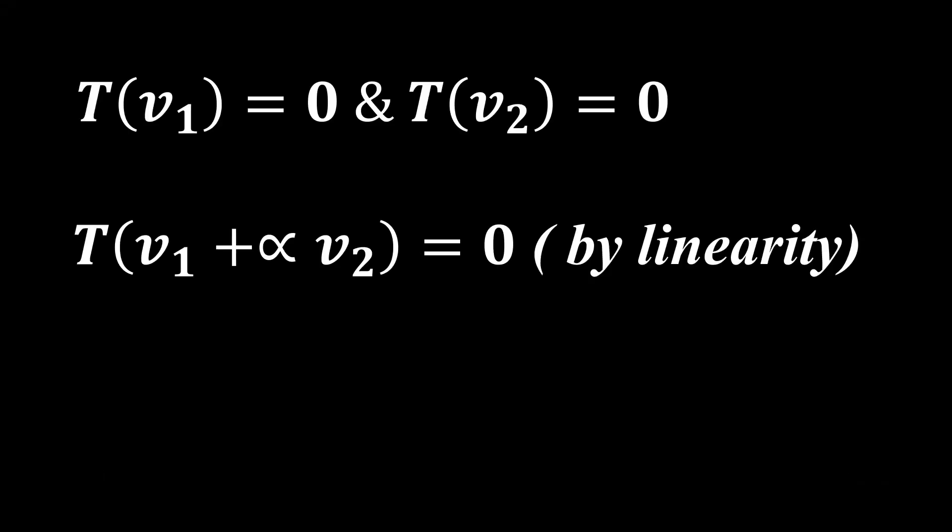The reason as to why I'm calling these sets vector spaces is that they are closed under addition and scalar multiplication. That's better proven algebraically. We can see that if two vectors map to the zero vector, the sum of the multiple of the vectors still goes to the zero vector.